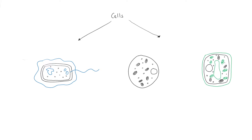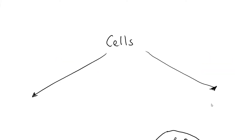Let's think about what cells are. Cells are the basic unit of life — they make up all living beings. When looking at the two major types of cells, we can classify them based on whether they have a nucleus or not.